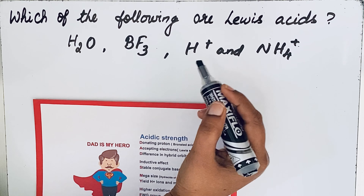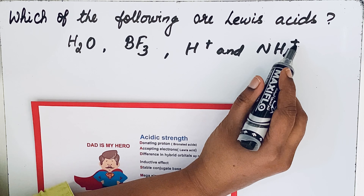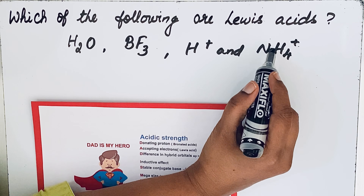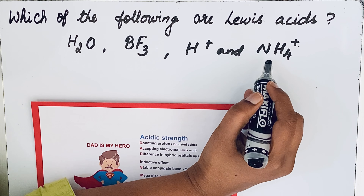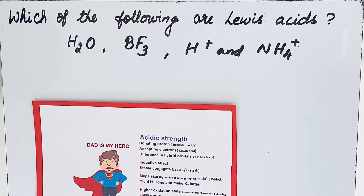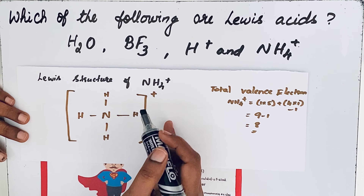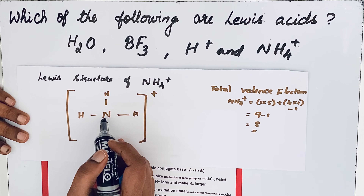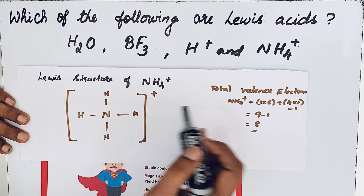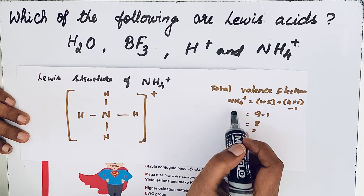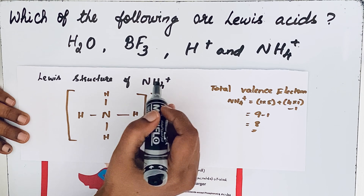Now NH₄⁺: it also carries a positive charge, so there seems to be a possibility for it to act as a Lewis acid. However, NH₄⁺ is not a Lewis acid. Looking at the Lewis structure of NH₄⁺, nitrogen does not contain any lone pair because four hydrogen atoms are attached to it. The total valence electrons in NH₄⁺ are eight, and all eight electrons are involved in bond formation. So even though a positive charge is present, this is not a Lewis acid — it is a conjugate acid.